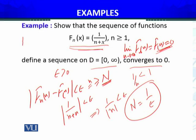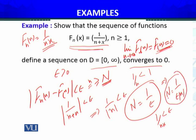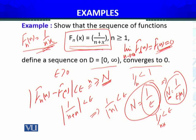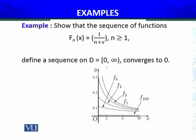Now if I modify the example to fn(x) = x/n, then |fn(x) − 0| = |x|/n < epsilon requires n > |x|/epsilon, so N depends on both epsilon and x. For the original example N depended only on epsilon, but for this modified version N depends on x as well. This distinction — whether N depends only on epsilon or also on the point x — is what I will use to define uniform convergence.